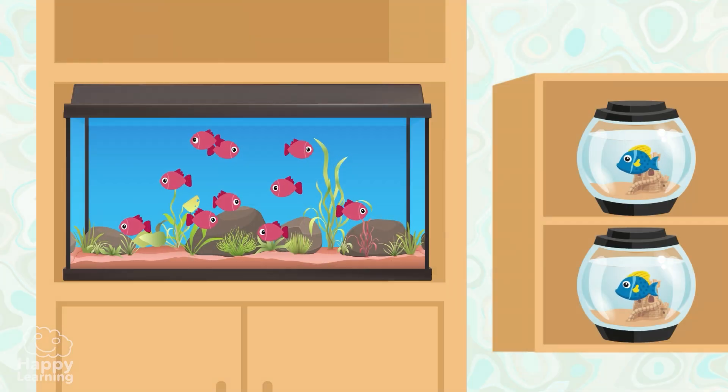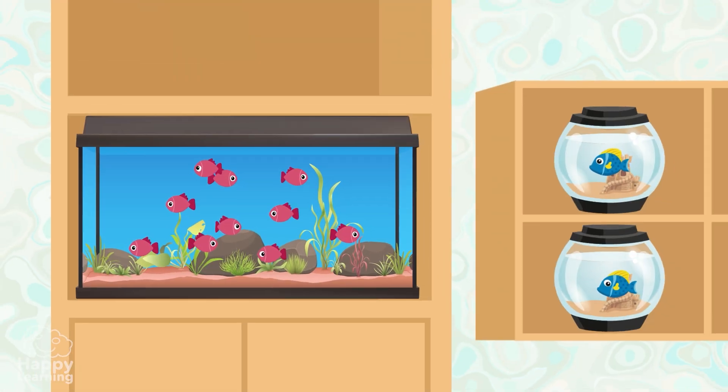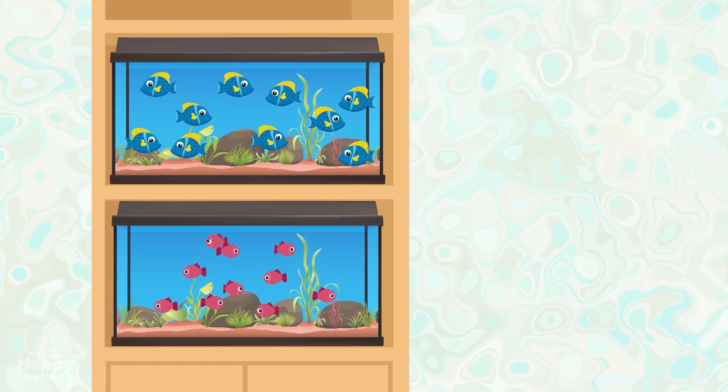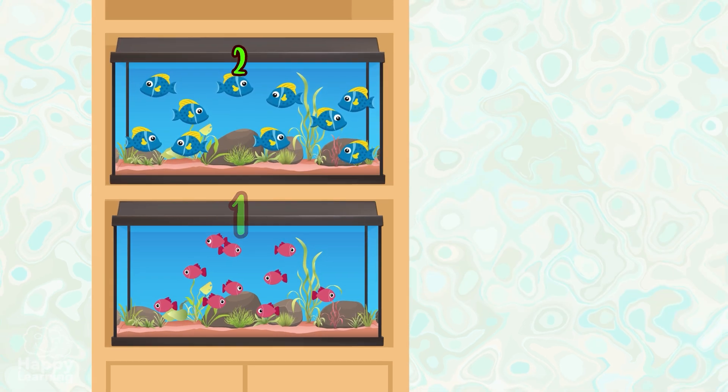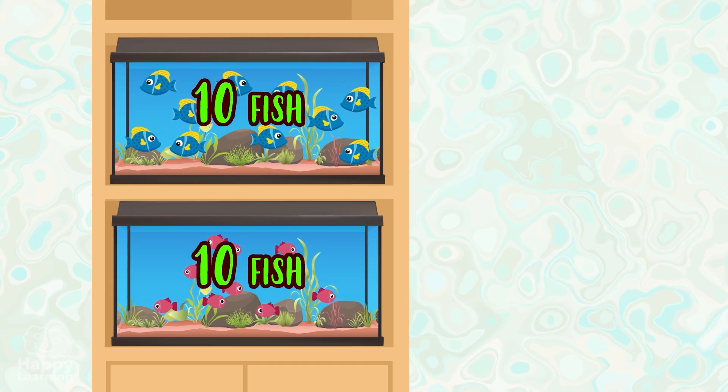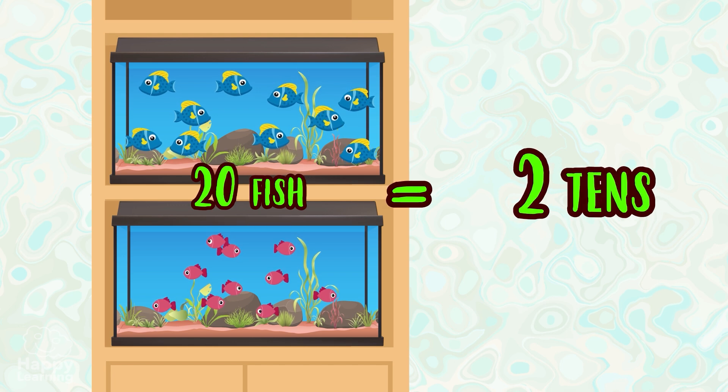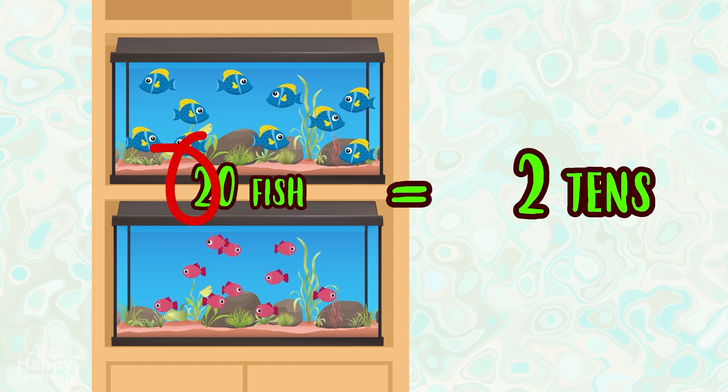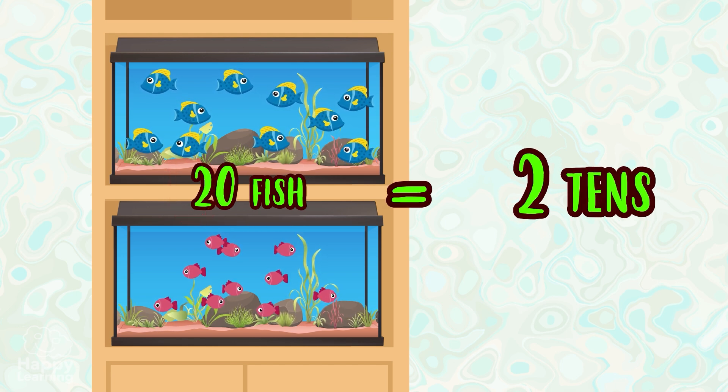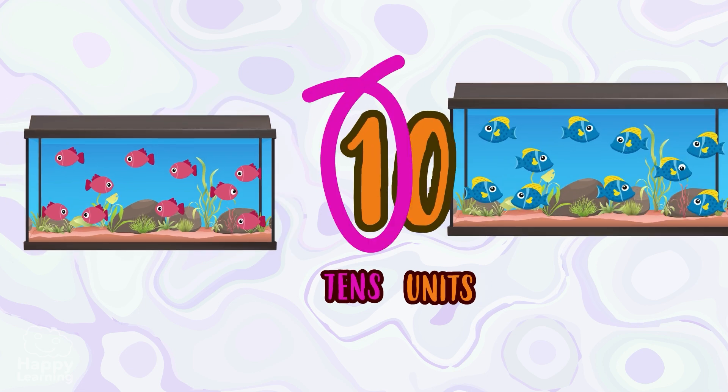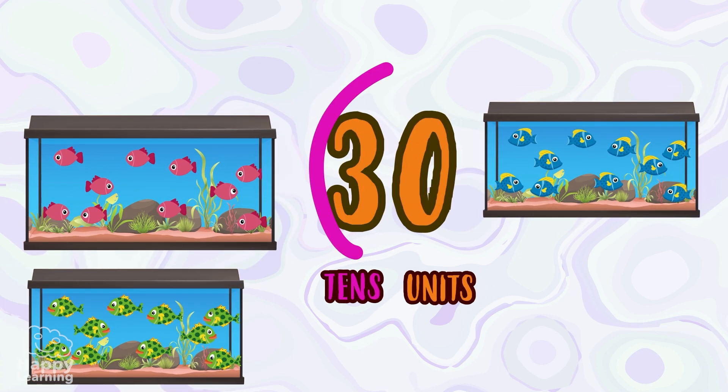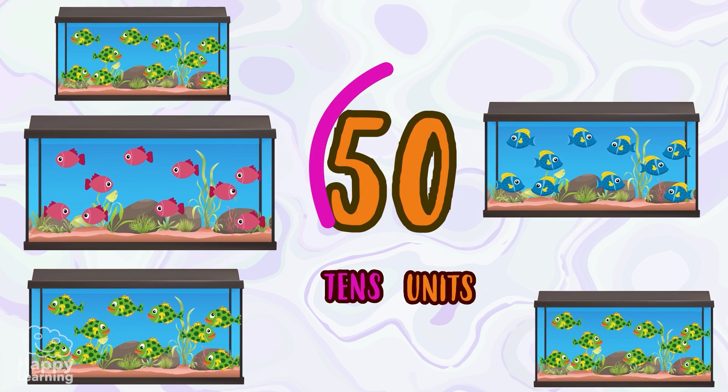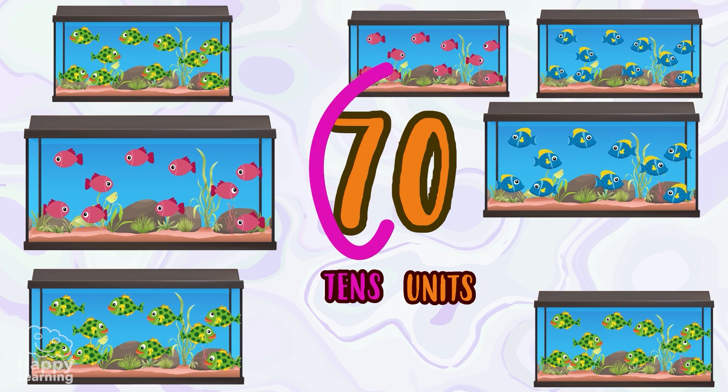Now, imagine that the number of fish is increasing, and now you fill two fish tanks, and each tank has ten fish. We would have two lots of ten. The tens start from ten and go up in tens: ten, twenty, thirty, forty, and so on, up to the number ninety.